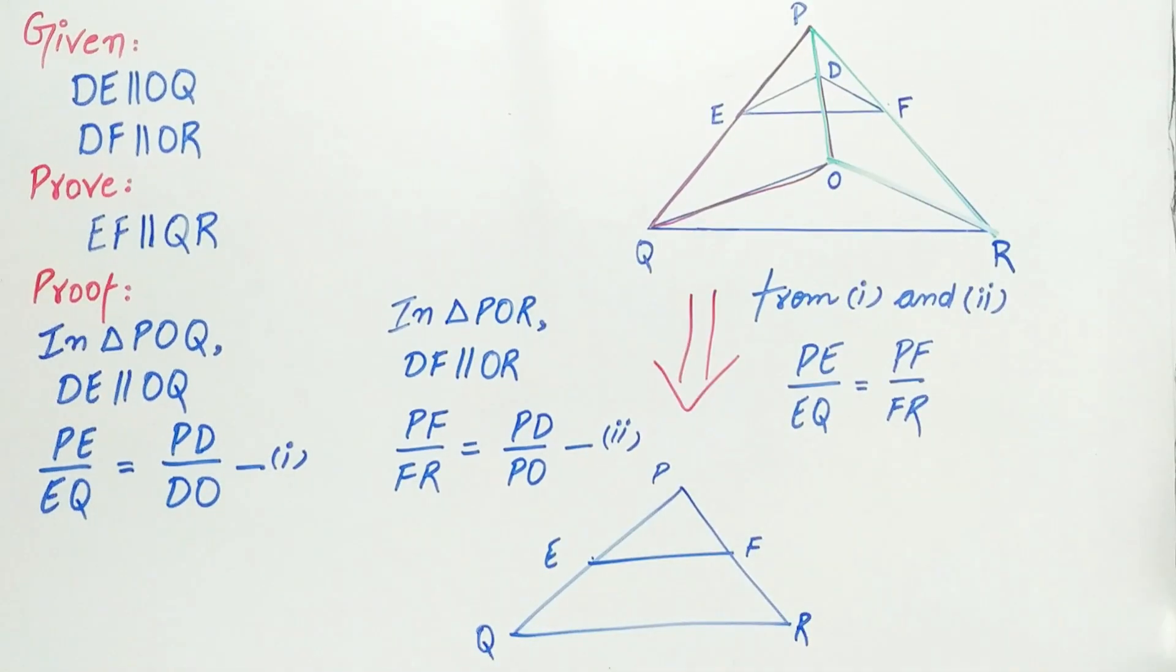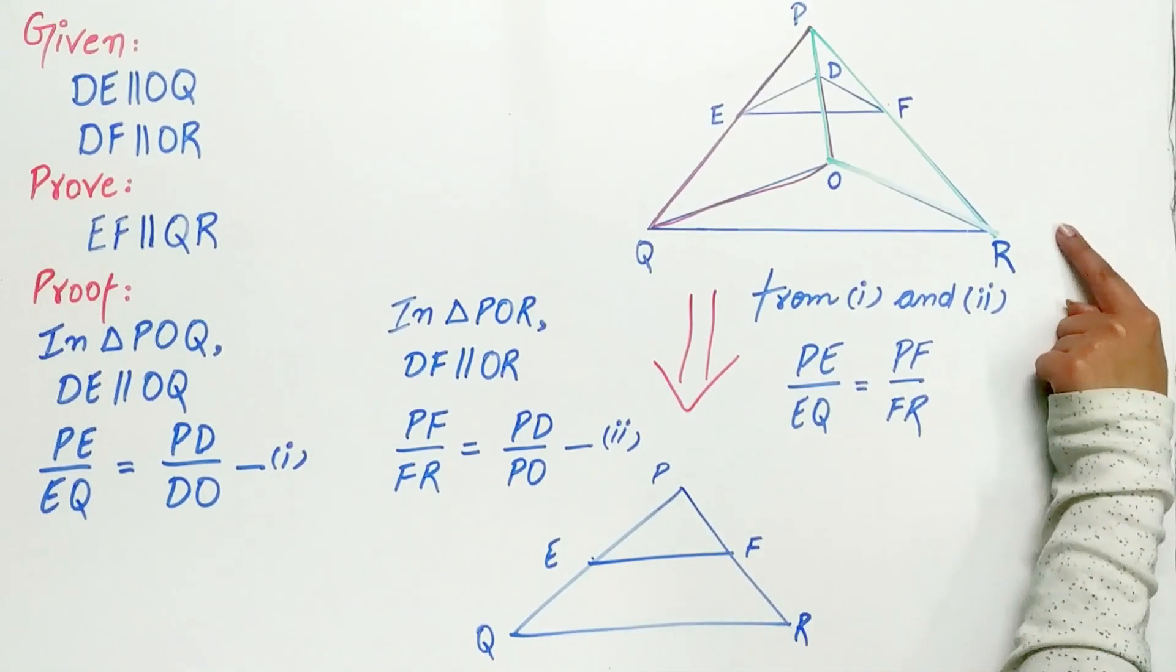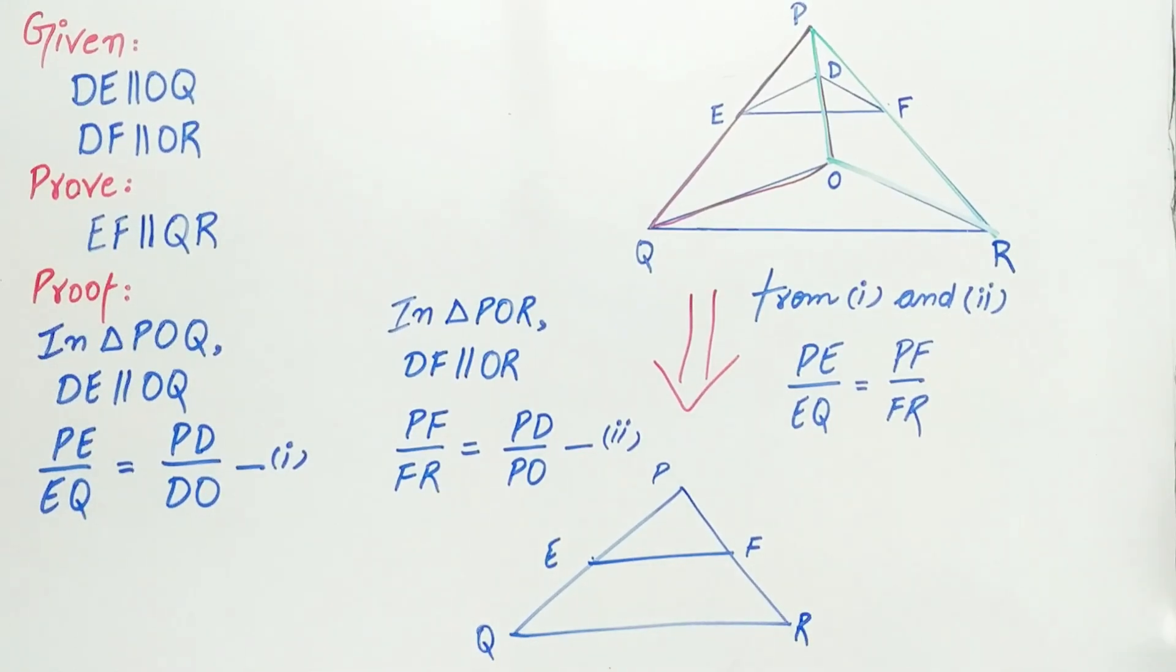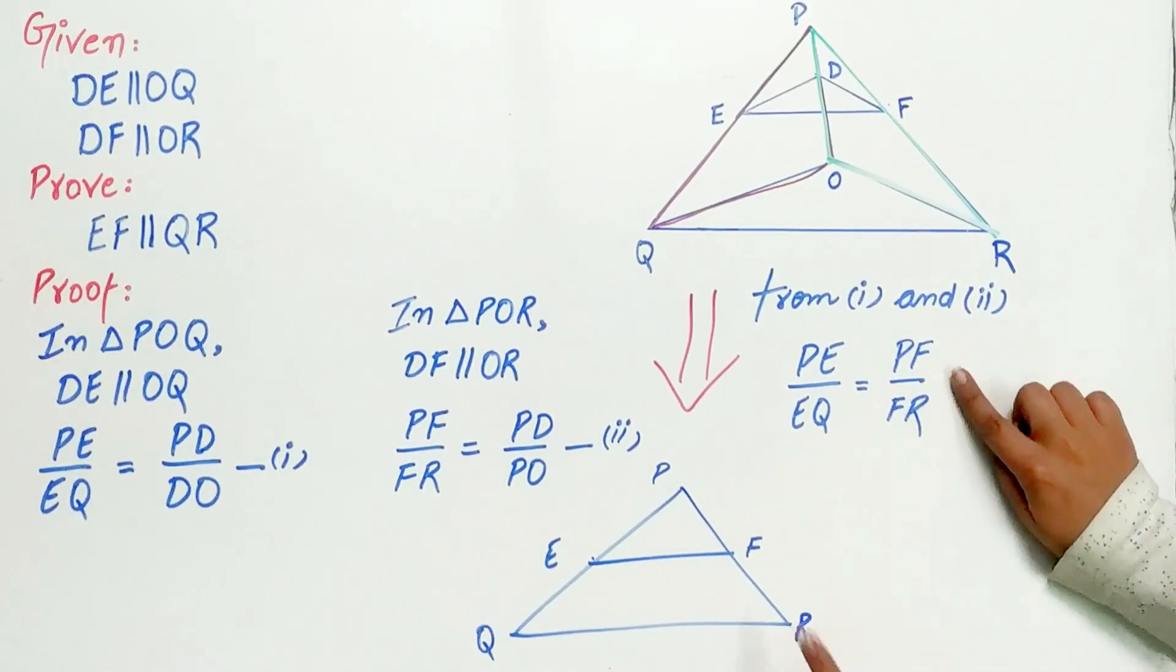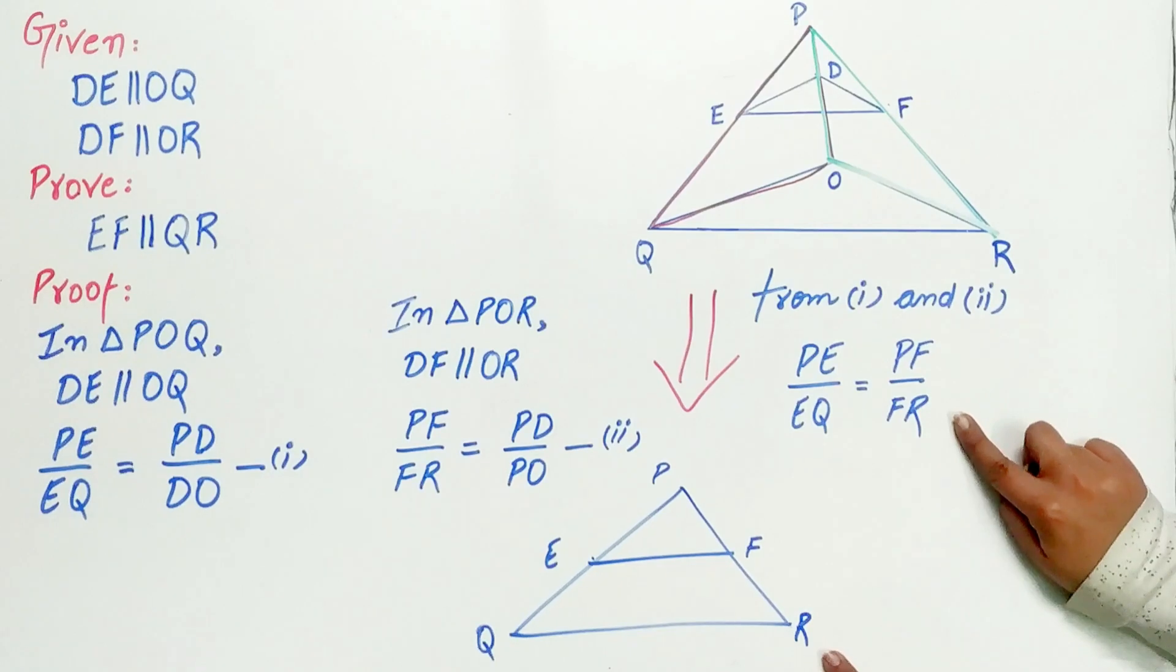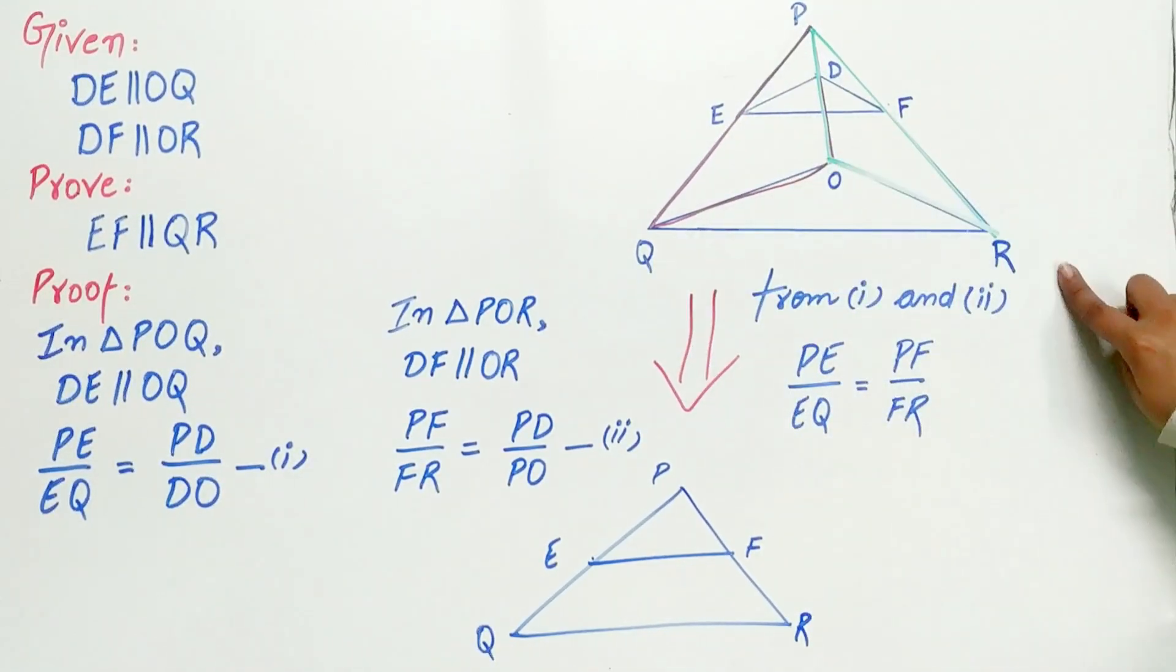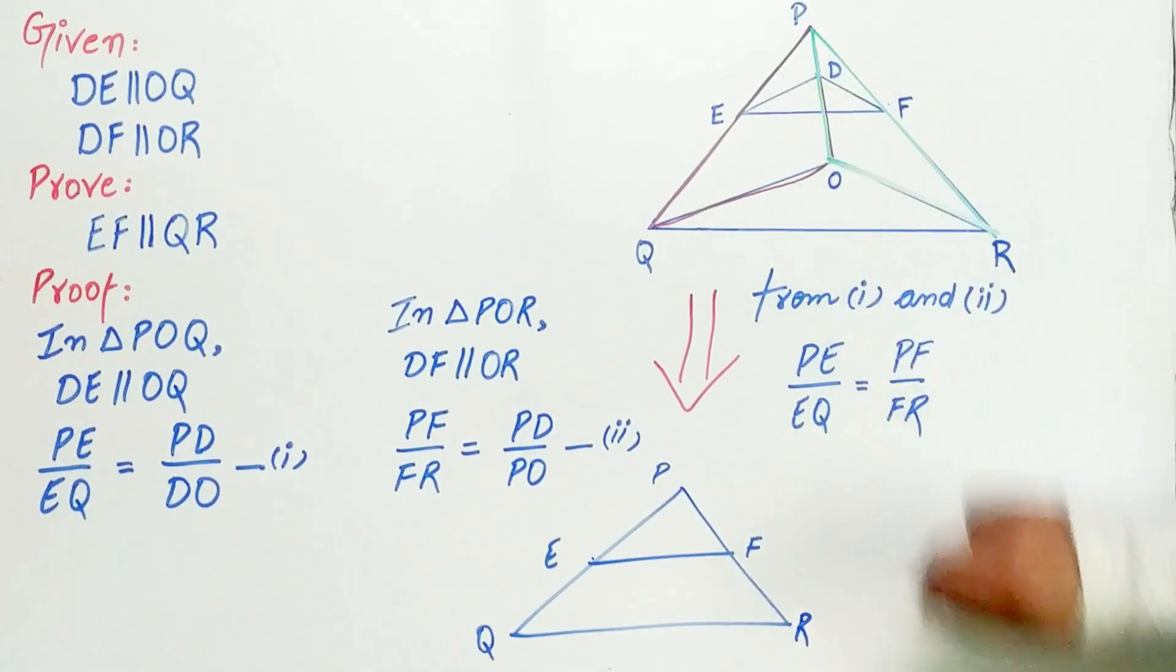Now, try to understand. I have erased few lines in the original diagram for better understanding. Now, look. PE by EQ is equal to PF by FR. I have erased ED, DF, OQ and OR as well as OP.